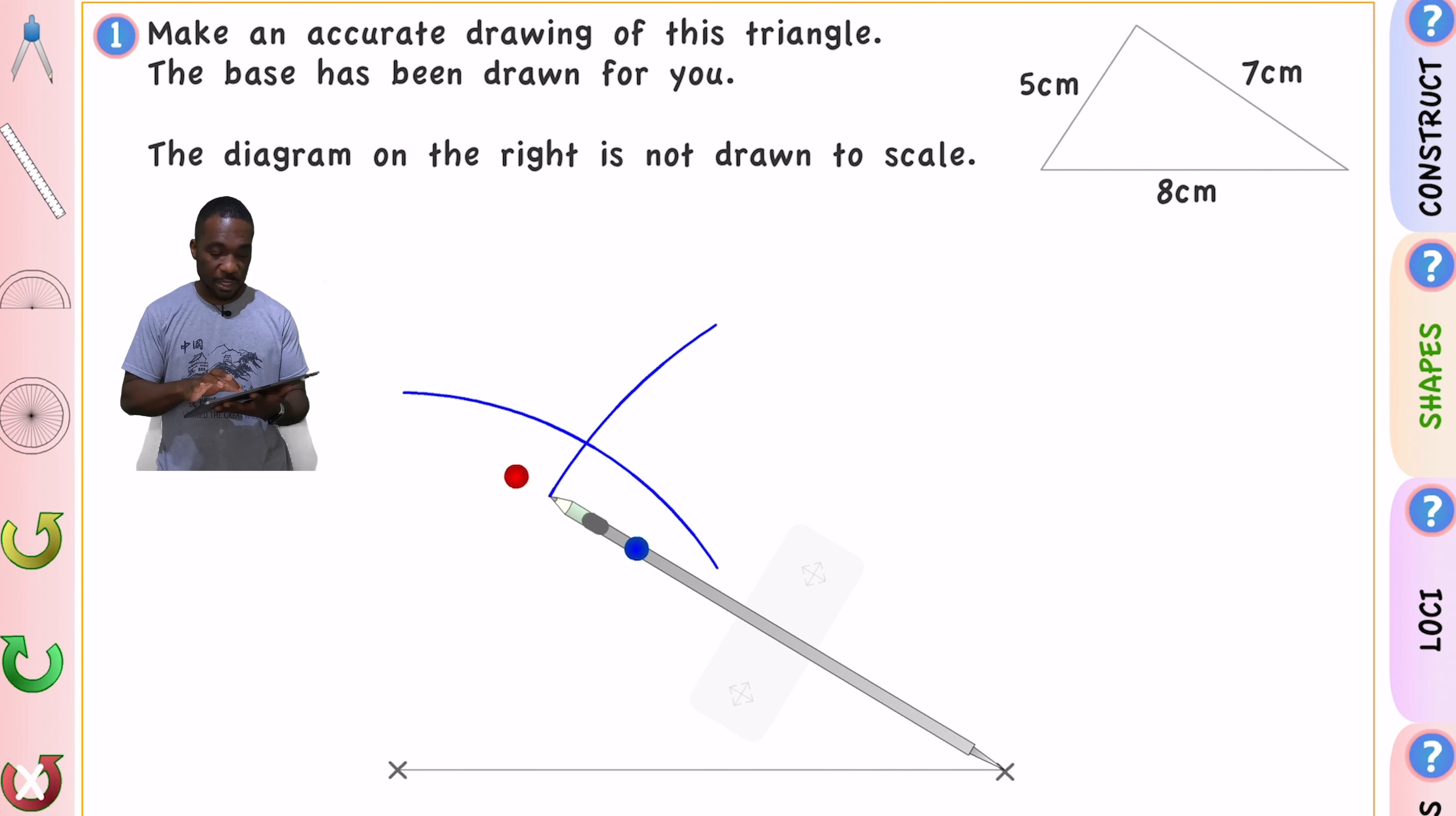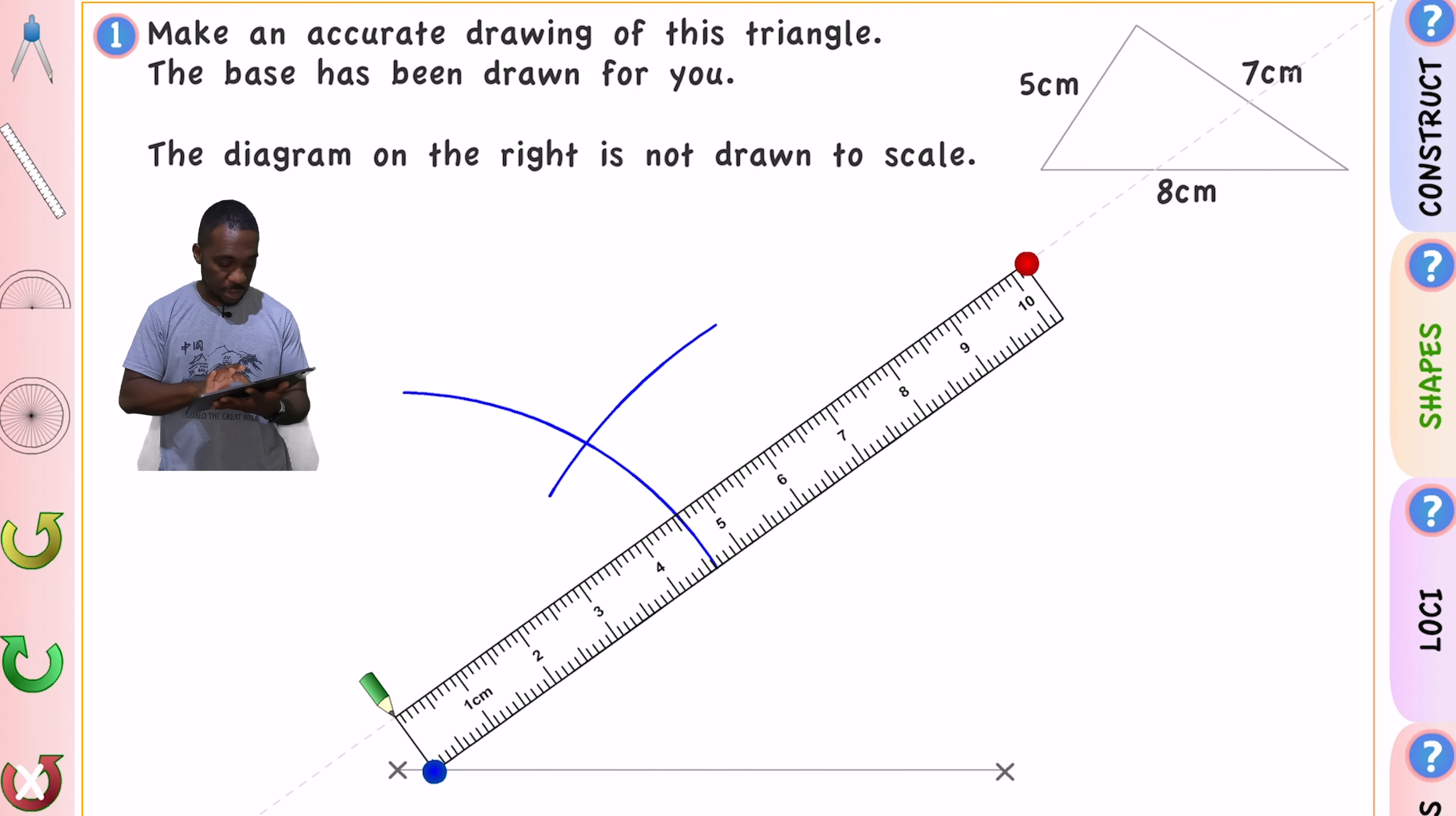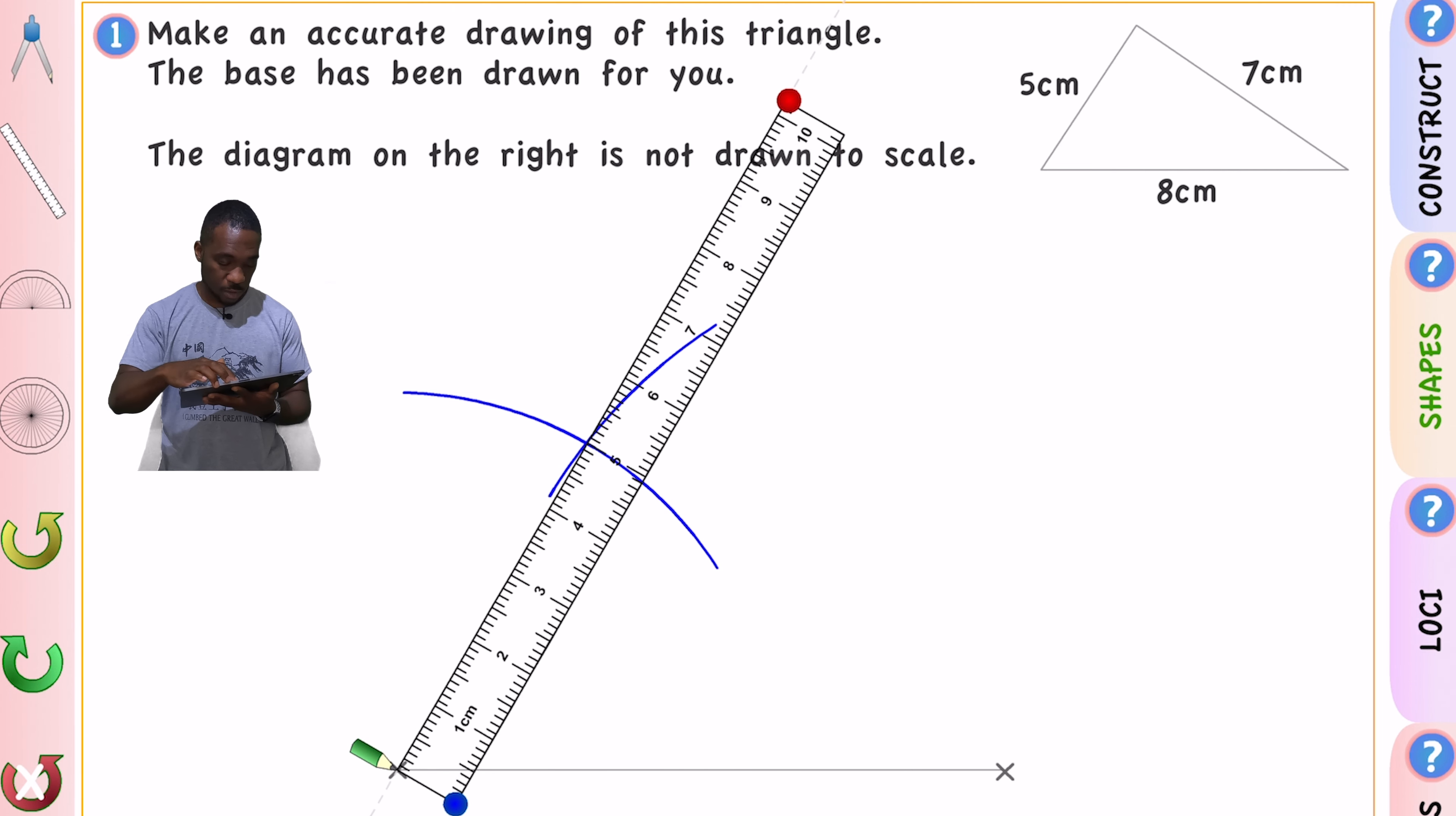Now that we've got that we know that the vertex of the triangle at the top is where those two arcs cross each other and we just need to make sure that was super precise here. So we go to that end of the line go to where the arcs cross each other check it with the pencil before drawing and then we draw that line there.